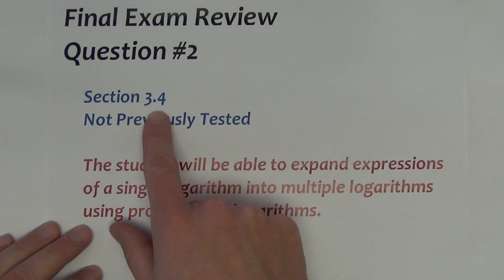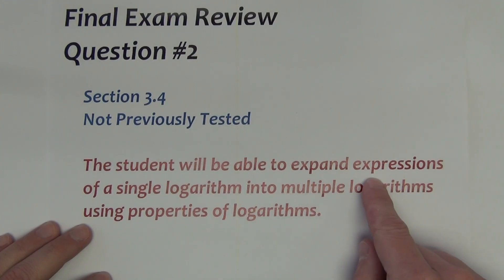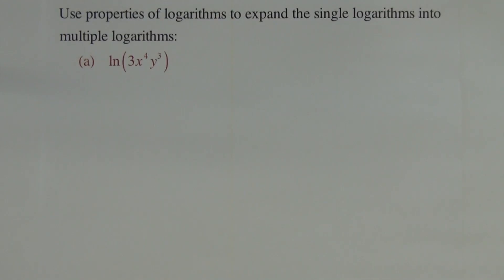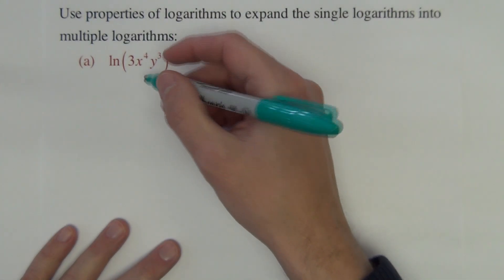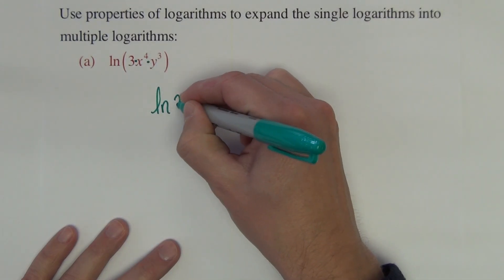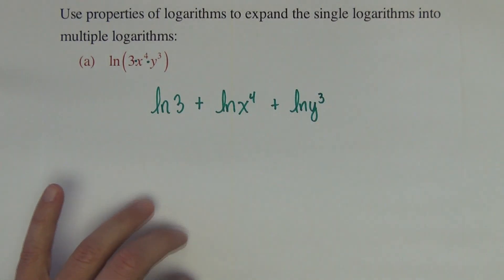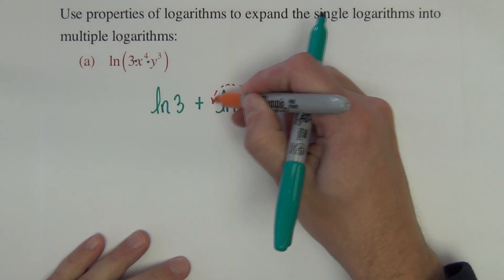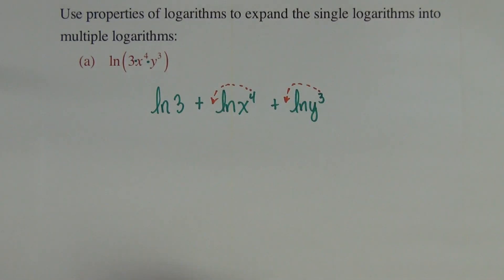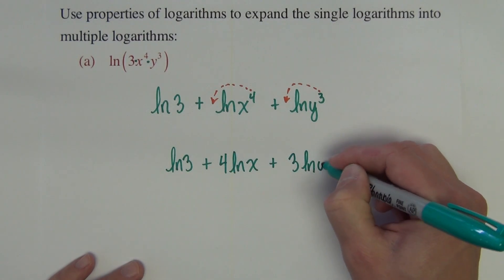Question number 2 on the final exam comes out of section 3.4 and has not been tested yet. In this question, we're going to go over how to expand expressions of a single logarithm into multiple logarithms using our properties of logarithms. Everywhere I see these logarithms or this expression connected with multiplication, that's where we're going to begin expanding. This is the same as natural log of 3 plus natural log of x to the fourth plus natural log of y cubed. All the exponents we see, we can drop down to the front of their respective logarithms. So our final answer is natural log of 3 plus 4 natural log of x plus 3 natural log of y.